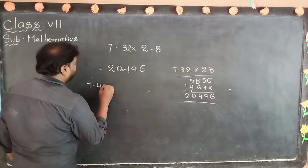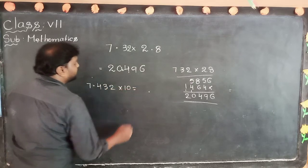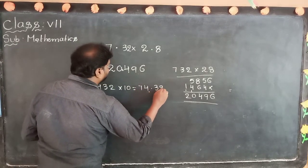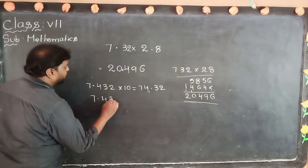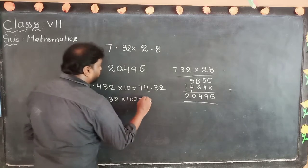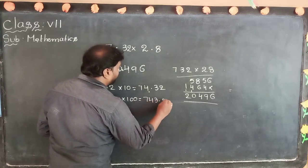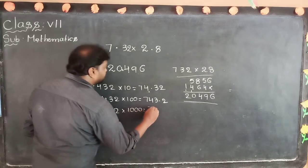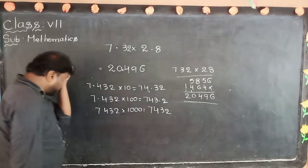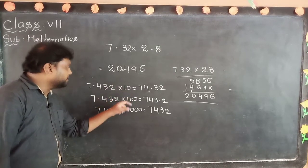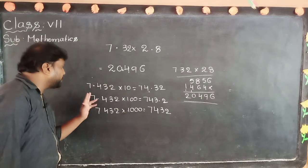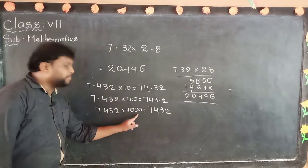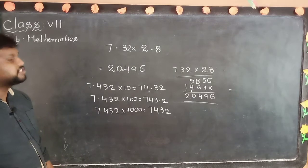For example, 7.432 into 10 gives 74.32. 7.432 into 100 gives 743.2. 7.432 into 1000 gives 7432. See — the total depends on the number of zeros. One zero: decimal point moves one position to the right. Two zeros: two places. Three zeros: three places. This is the multiplication of decimals with powers of 10.